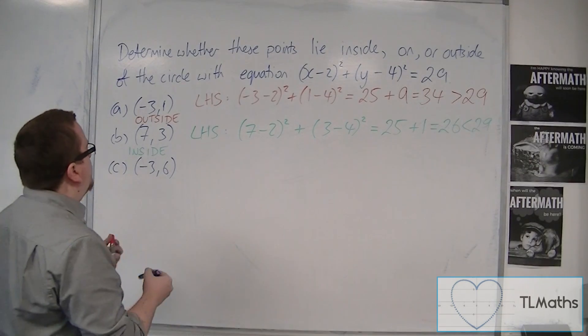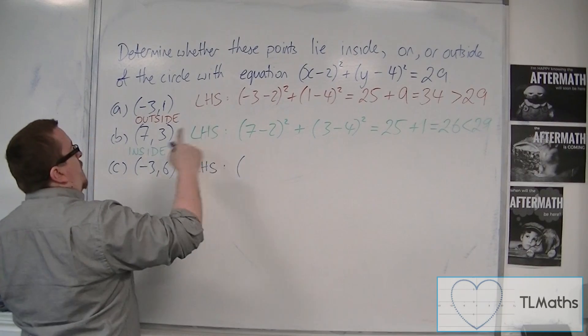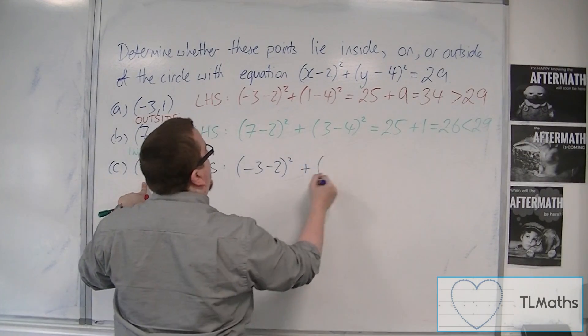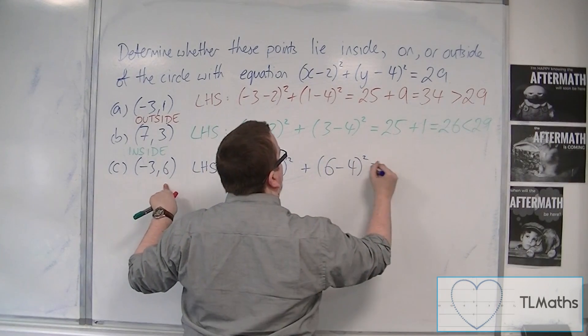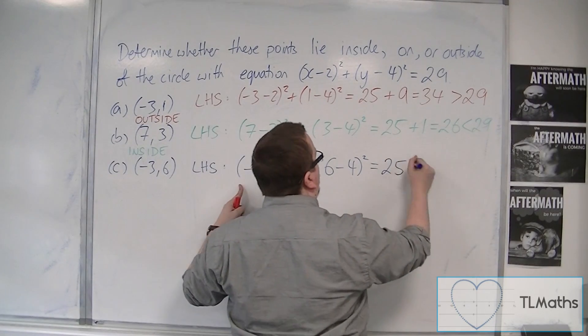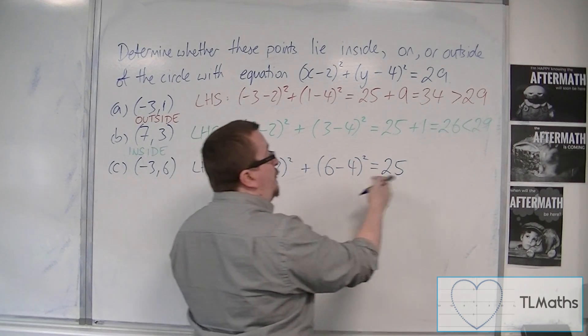So looking at the left-hand side, (-3 - 2)² plus (6 - 4)². So -3 take away 2 is -5 squared is 25. 6 take away 4 is 2, squared is 4. So we get 29.